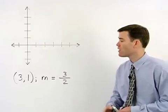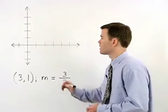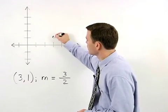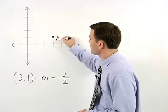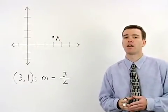We would start things off by plotting our point. So we go over 3 and up 1 and call that point A. In order to graph a line, however,